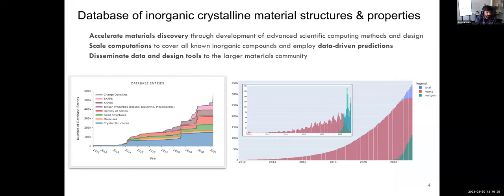The Materials Project is a database of inorganic crystalline material structures and their properties. We have three major pillars: accelerating materials discovery through advanced scientific computing including high performance computing; scaling computations across all inorganic compounds to make data-driven predictions; and open source dissemination — enabling the larger community to use our data and design tools. Users span industry, education, and government. We're at about 150,000 materials in the database, all unique.